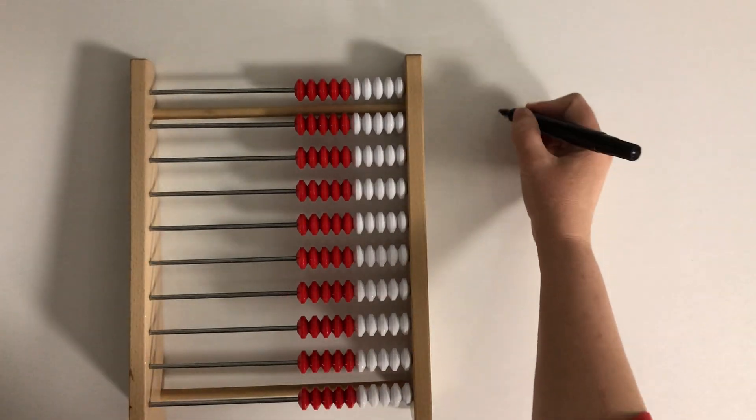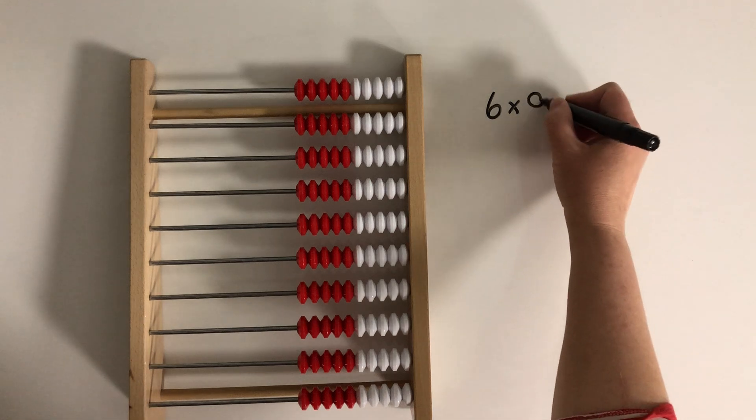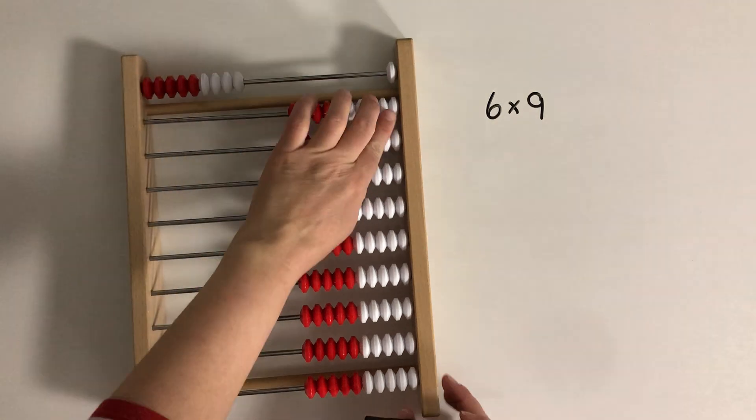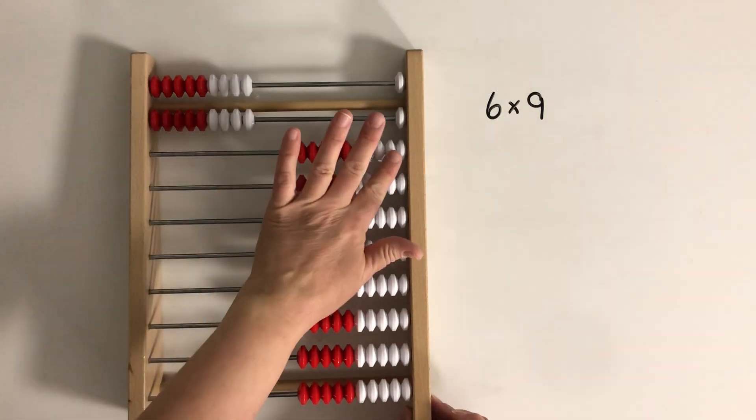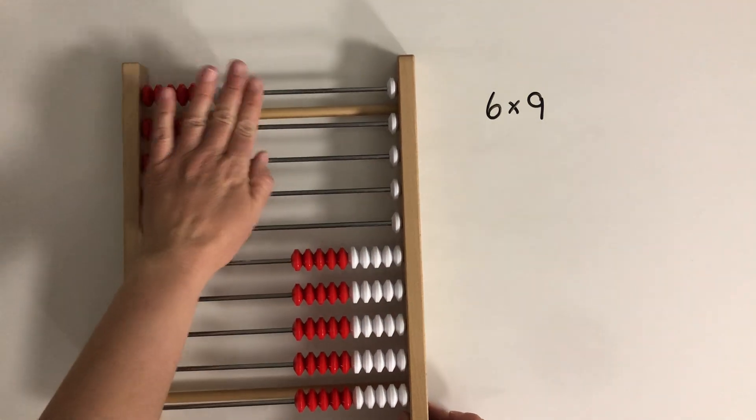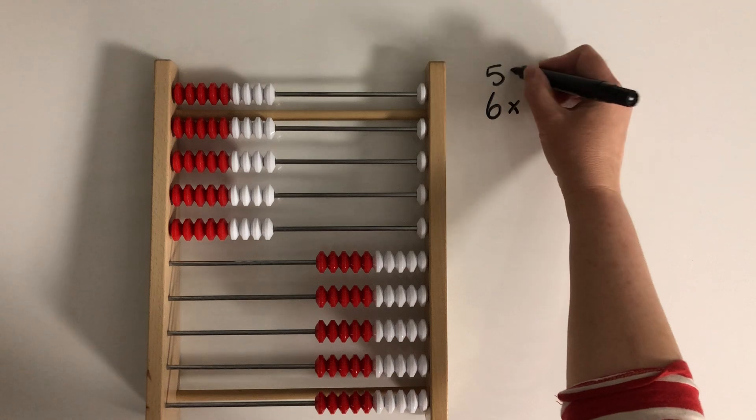Let's figure out 6 times 9. So first of all, what we could do is figure out what 5 groups of 9 is. Maybe we already know that fact. Maybe we know that 5 groups of 9 makes 45.